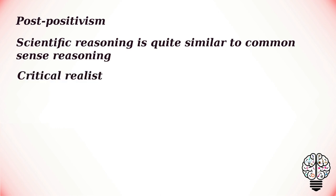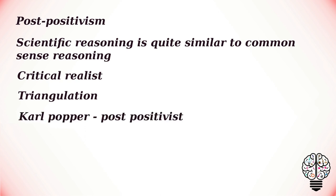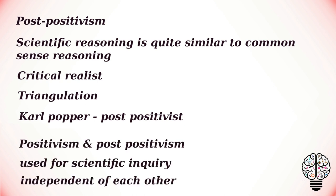Post-positivists point out that our observation cannot always be relied upon as it can also be subjected to error. This is why post-positivists are considered critical realists — they are critical of the reality that they study. Since they are critical of reality, post-positivists do not rely on a single method of scientific inquiry. Using a number of methods to avoid error is referred to as triangulation.